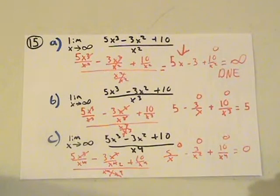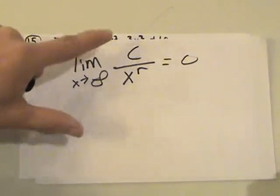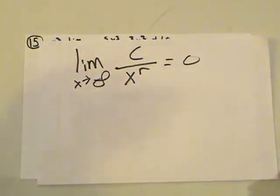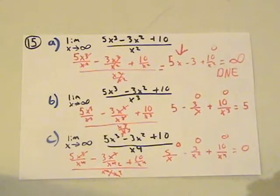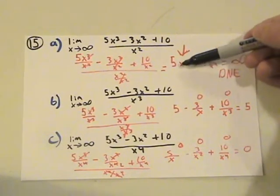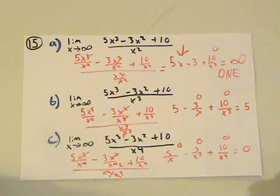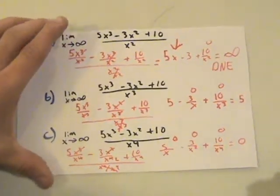A quick fact about rational functions: when we get a constant over x to any exponent, it's always going to be zero. So, a constant over x to some exponent always equals zero — that's what we like, when things cancel out. Here though, we have 5x — it's not over x, it's multiplied by x. So that's simply going to go to infinity when we apply the limit. So the limit is infinity, meaning it doesn't exist. That's part A.